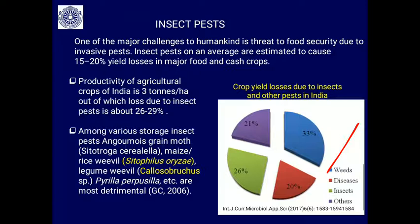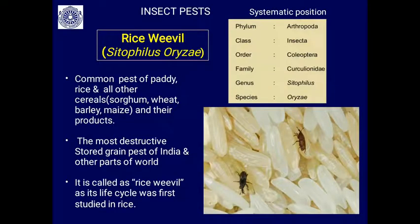Among various storage insect pests, the major ones include the grain moth Sitotroga cerealella, the rice weevil Sitophilus oryzae which we are discussing today, the legume weevil Callosobruchus species, and Pyrilla. All of these are the most detrimental and major pests causing damage to crops and stored grains.